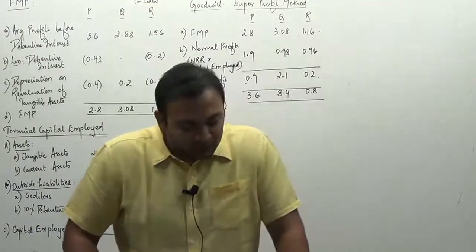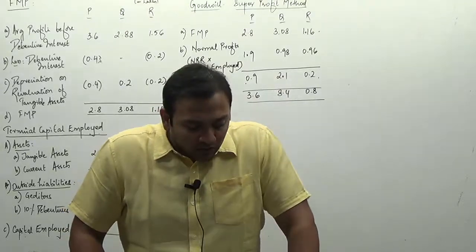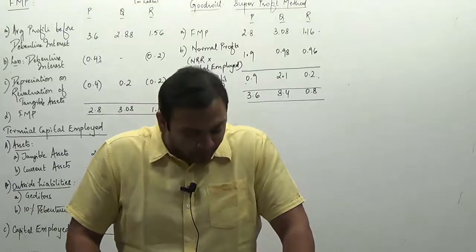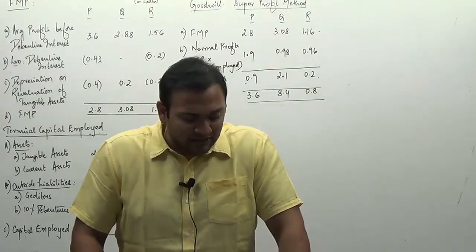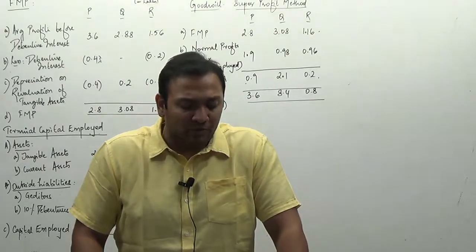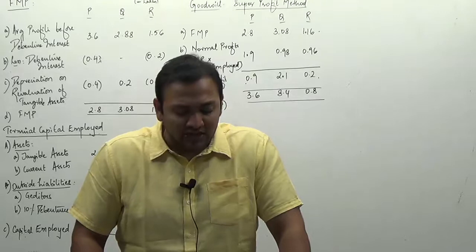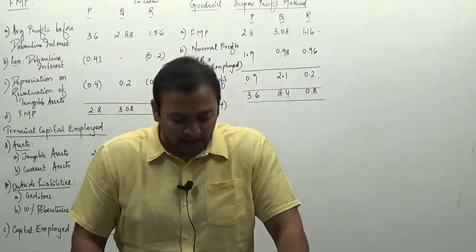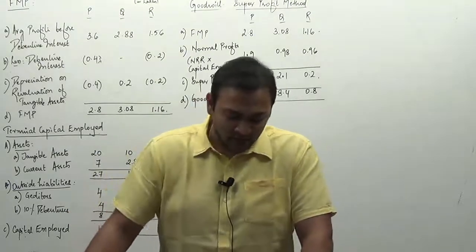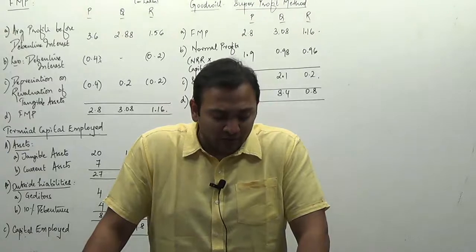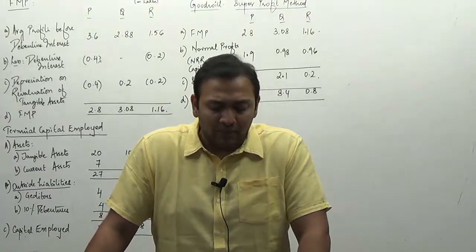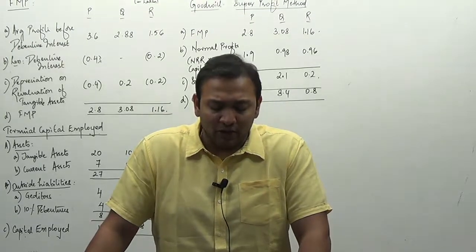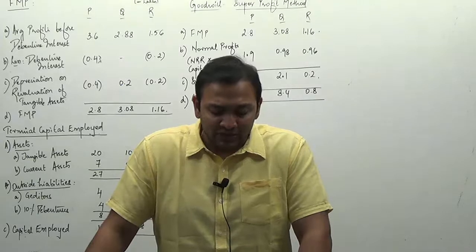Question number nine: the following particulars are of two companies. Ascertain the value of goodwill if assets are revalued and goodwill is four years purchase of average super profits of the last three years. The average is to be calculated after adjusting depreciation at 10% on increase or decrease in revaluation of fixed assets. Income tax is to be ignored. Normal profit on capital employed is 10%, capital employed being considered on the basis of net revalued amounts of tangible assets.